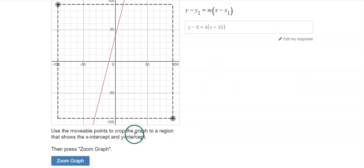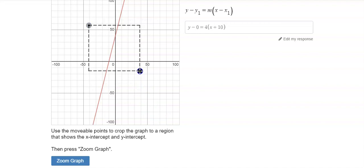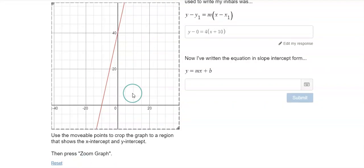If you see something has popped up here and that's going to happen. Things are going to keep popping up for you to answer. This says use the movable points, that's this, to crop the graph to a region that shows the X intercept and the Y intercept. So we're basically just going to zoom in like that. I press zoom graph and voila, it has zoomed for me. A new question has popped up though.